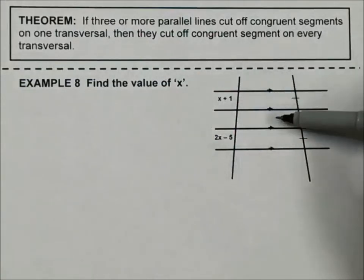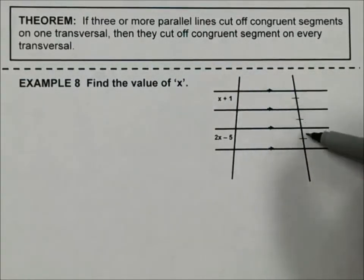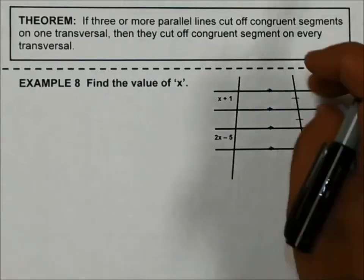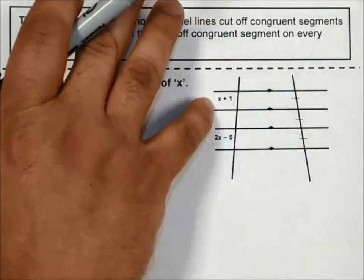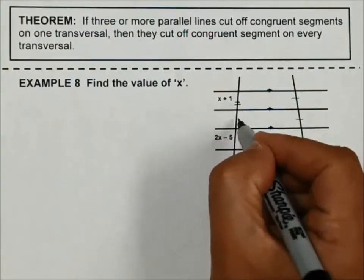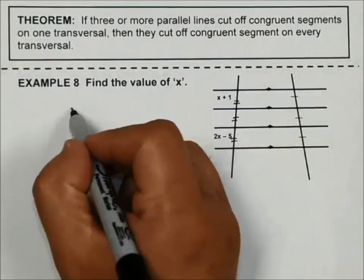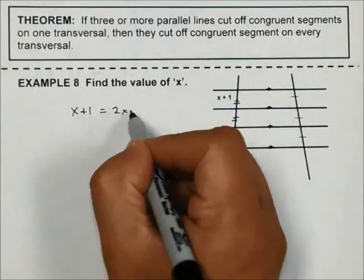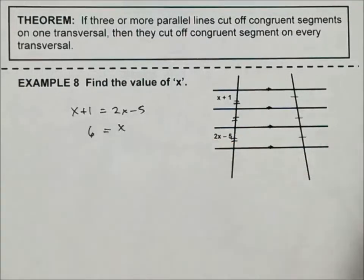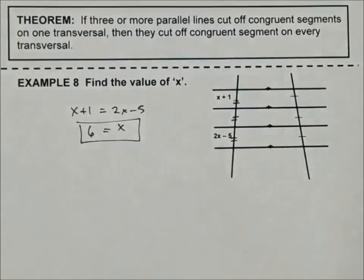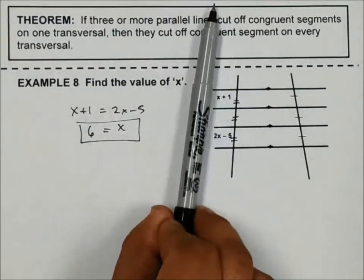If you notice, I've got parallel lines coming all the way through these two lines right here. But notice these tick marks. These parallel lines are cutting this transversal into congruent pieces. Well, if it does it on this side, then these pieces over here are going to be congruent to themselves. So this piece would be equal to this piece and this piece. So if I want to solve for X, I simply just let X plus 1 be equal to 2X minus 5 and solve for X. So if I subtract X here and then I add 5, it gives me 6. And we're done. So if I notice that these parallel lines are cutting the transversal into congruent sections, it's going to cut it into congruent sections on the other side as well.